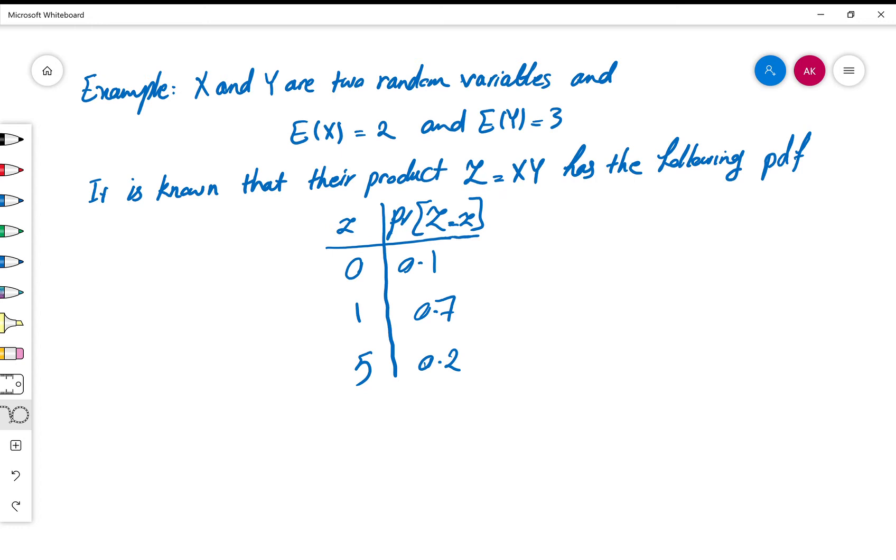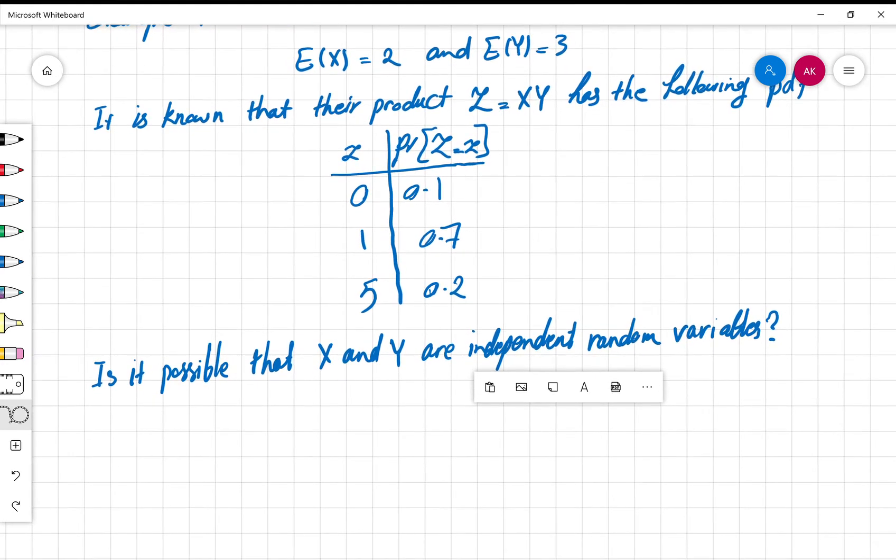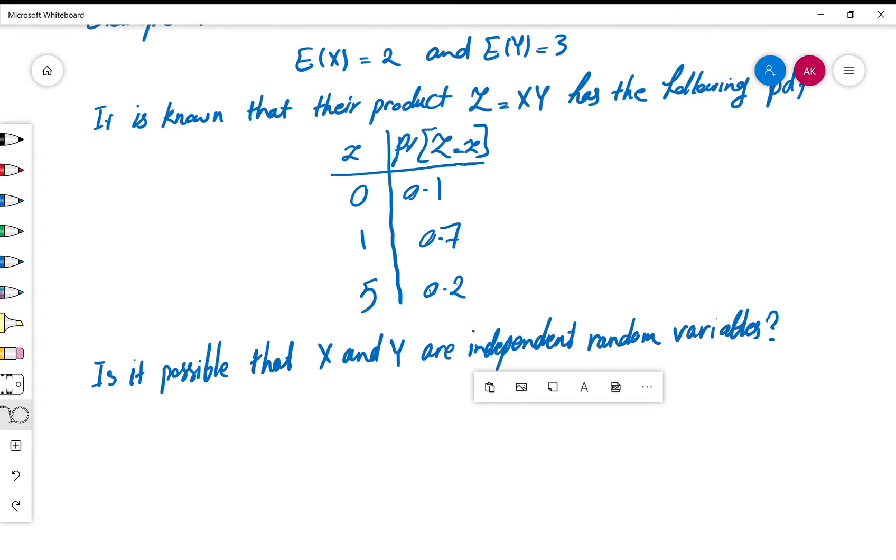It is known that their product, which I denoted by Z, has the following PDF table. This is the table. Now the question says: is it possible that X and Y are independent random variables?